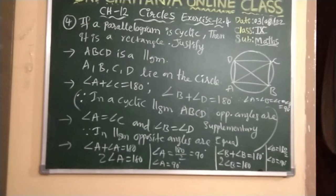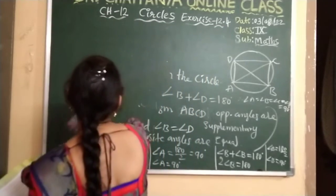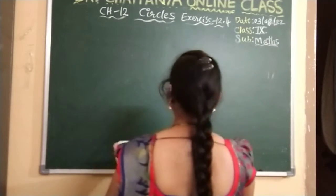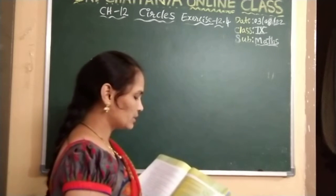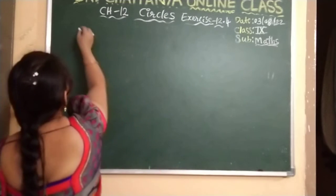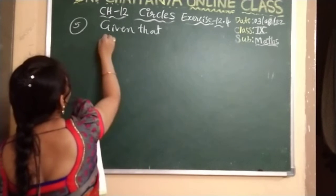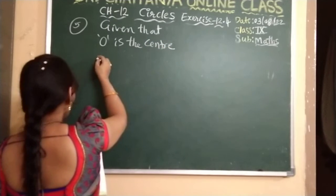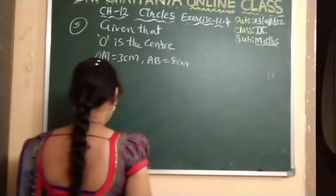Next is the fifth question — very simple. It is given that in the figure, O is the centre of the circle, OM is 3 cm, AB is 8 cm. Find the radius of the circle. Given: O is the centre of the circle, OM is 3 cm, and AB is 8 cm.